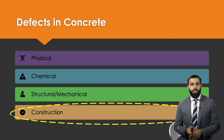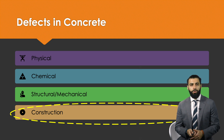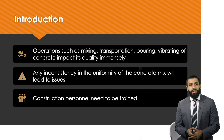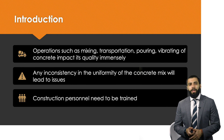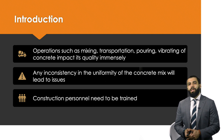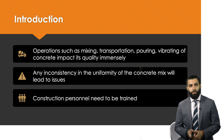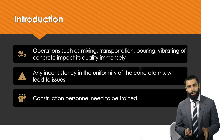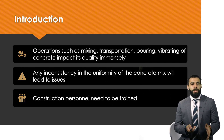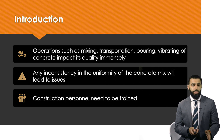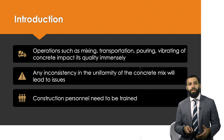In terms of the classification of defects, this video will talk about construction defects. In previous videos we've already discussed physical, chemical, and structural defects in concrete. Operations on the construction site impact the quality of the final product — concrete quality is dependent on how it was mixed, how it was transported, how the pouring took place, and the level of vibration conducted as the concrete was poured. Any inconsistency in the uniformity of the concrete mix will lead to construction defects. One major factor in controlling these defects is through the training of construction personnel on the appropriate ways of dealing with concrete.